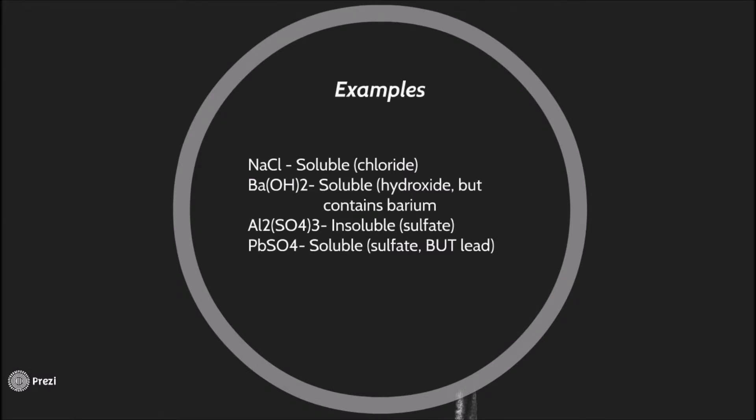Some of the examples are below. For example, NaCl, which is the chemical formula for salt, is soluble because it is a chloride. The second one would be barium hydroxide, which is soluble. It would be insoluble if it were just hydroxide. But since it contains barium, it is soluble.